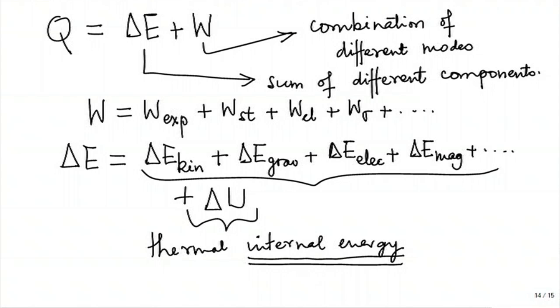Before completing the discussion of the first law, we have: stated the first law as work done by an adiabatic system between two fixed states is independent of the path; dW_adiabatic is an exact differential, giving the definition of change in energy; for non-adiabatic processes, the definition of heat transfer; and then the final form of the first law. We looked at various components of work and various components of ΔE; writing these in expanded form gives an expanded form of the first law.